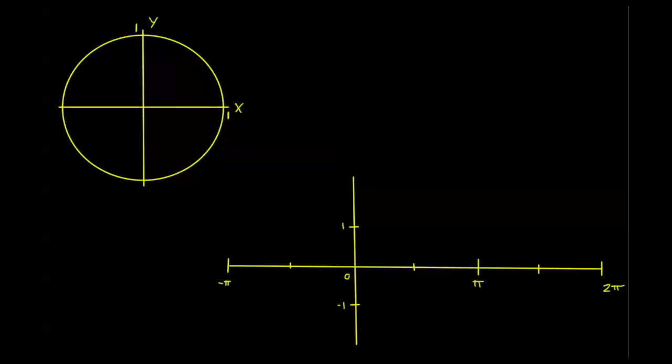But before we start graphing it's useful to note that sine and cosine both repeat themselves in a very regular way. Remember we had our definitions before of sine of t is equal to y and cosine of t is equal to x.